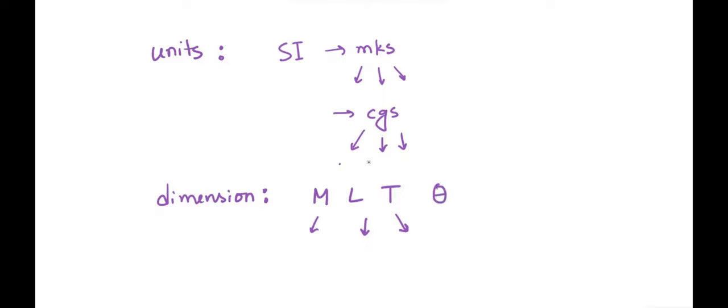For basic mechanics, we just need MLT. Quantities that have basically the same dimension are often the same quantities, but sometimes they're not. A big difference is, for example, the concept of work and torque, which we'll be talking about. They both have the same dimension, but they are very, very different quantities — with remote connections, but they are not the same thing.